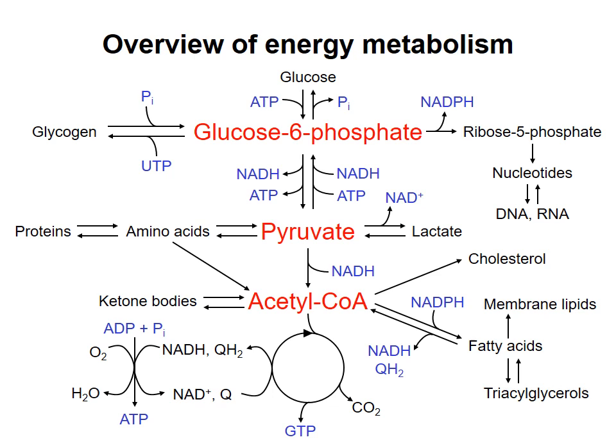Notice that three molecules are central in these processes: glucose 6-phosphate, pyruvate, and acetyl-CoA. If you understand the various fates of these three compounds, then the entire diagram will make a lot more sense.